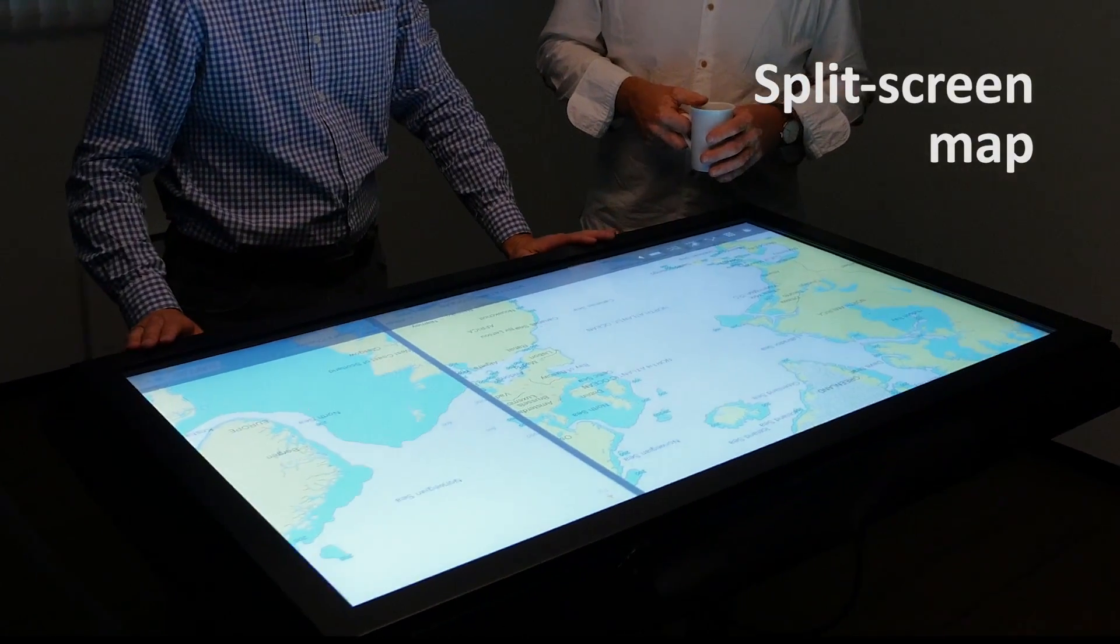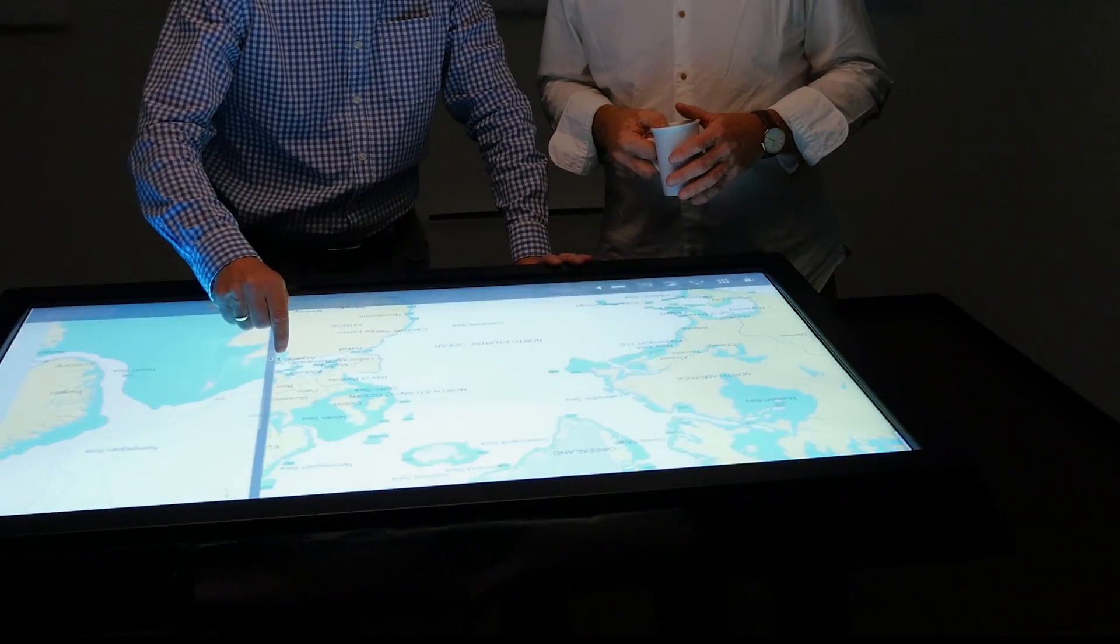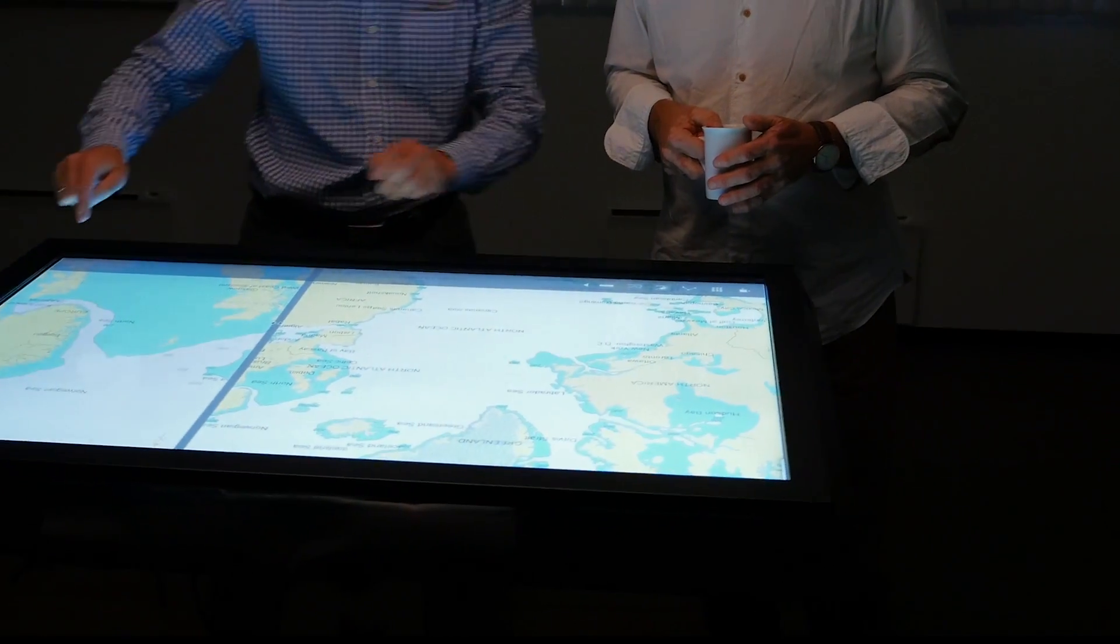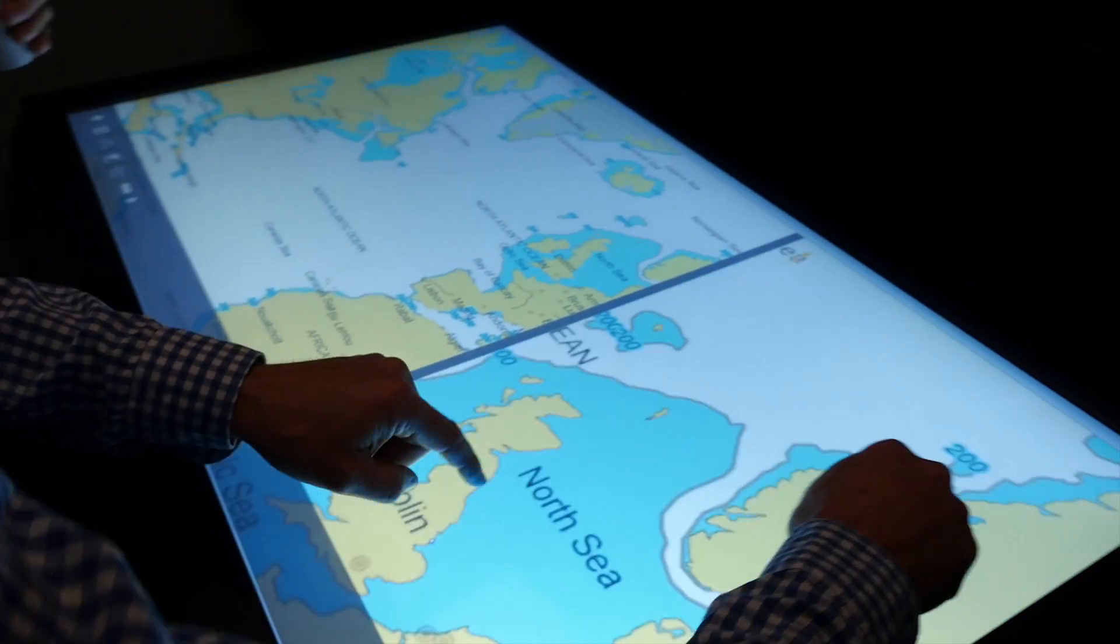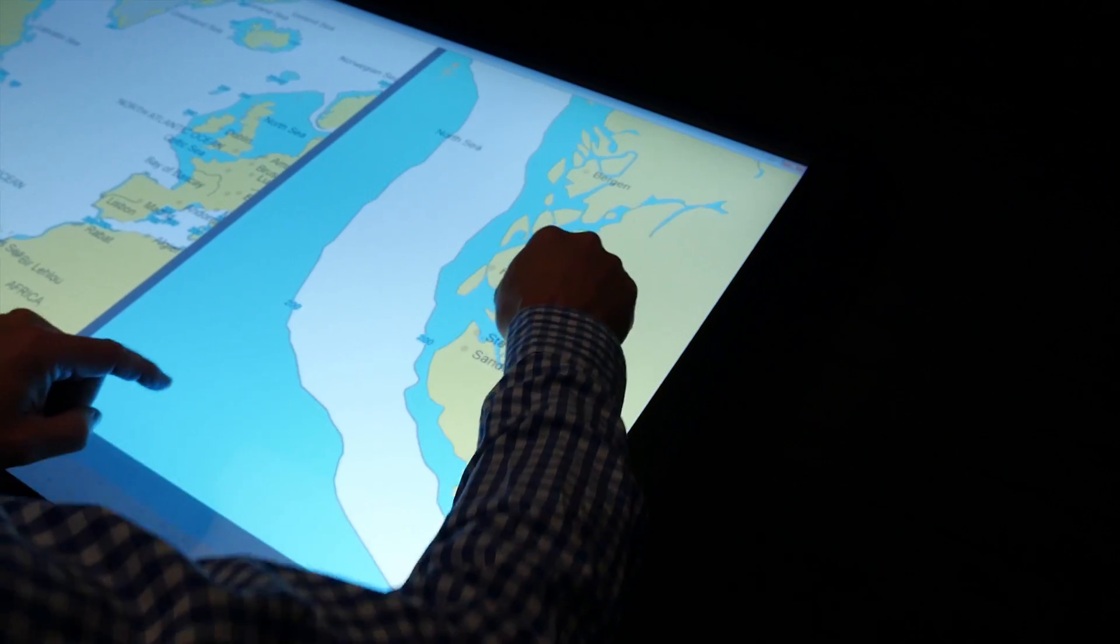The digital chart table offers split-screen functionality, giving you the ability to study journey overview charts and more detailed charts simultaneously. The split screen can be moved at any time to focus on specific charts.